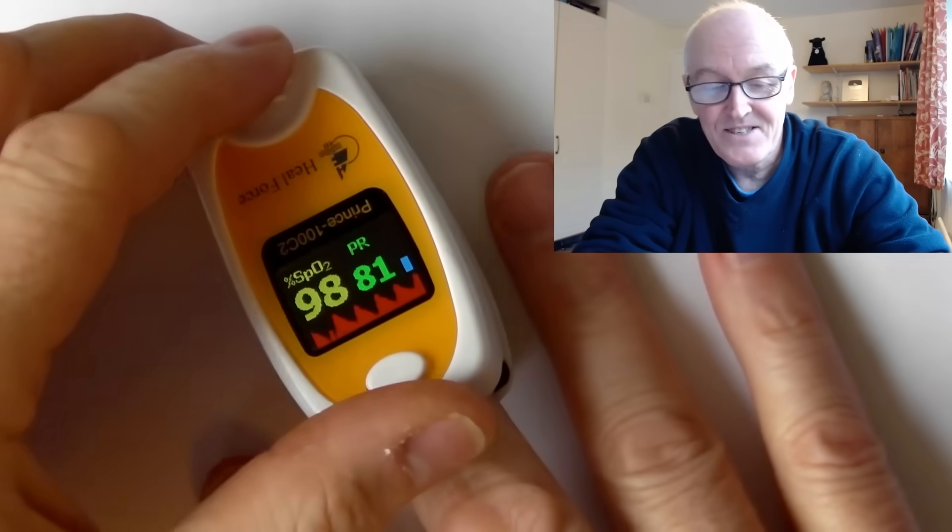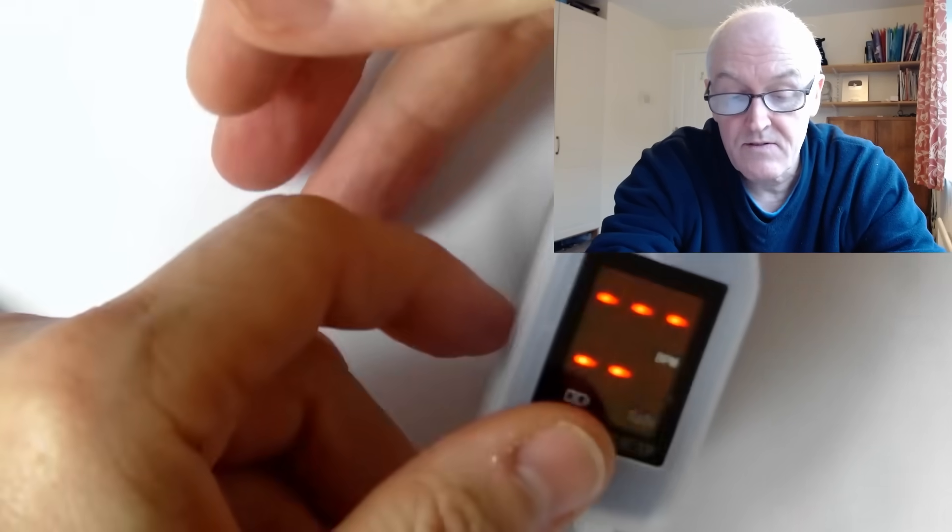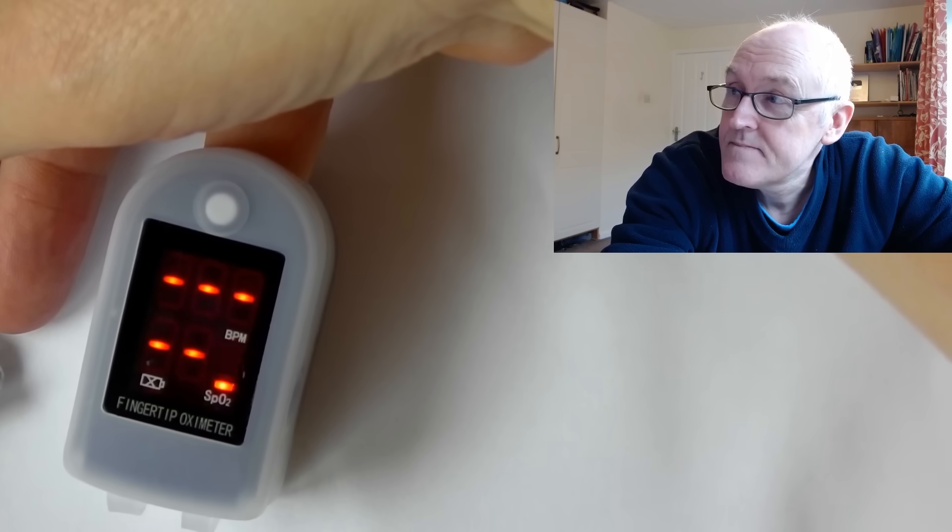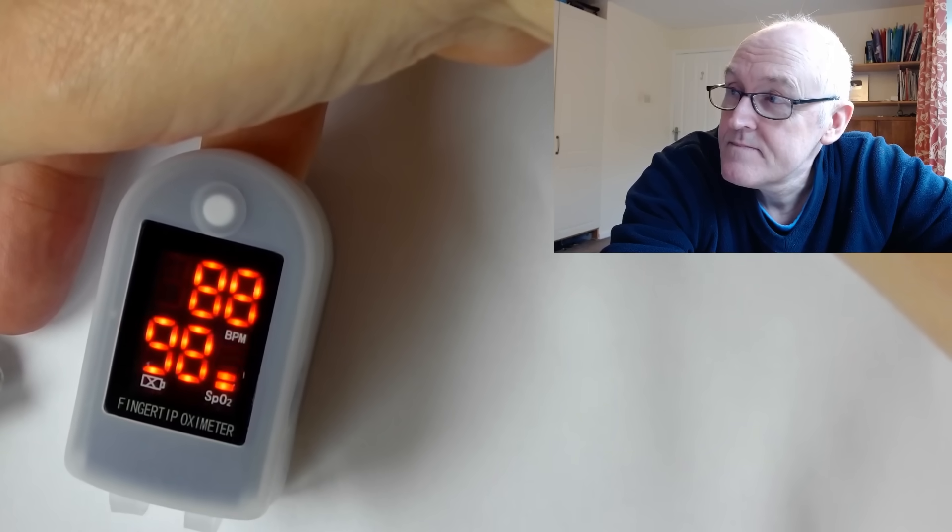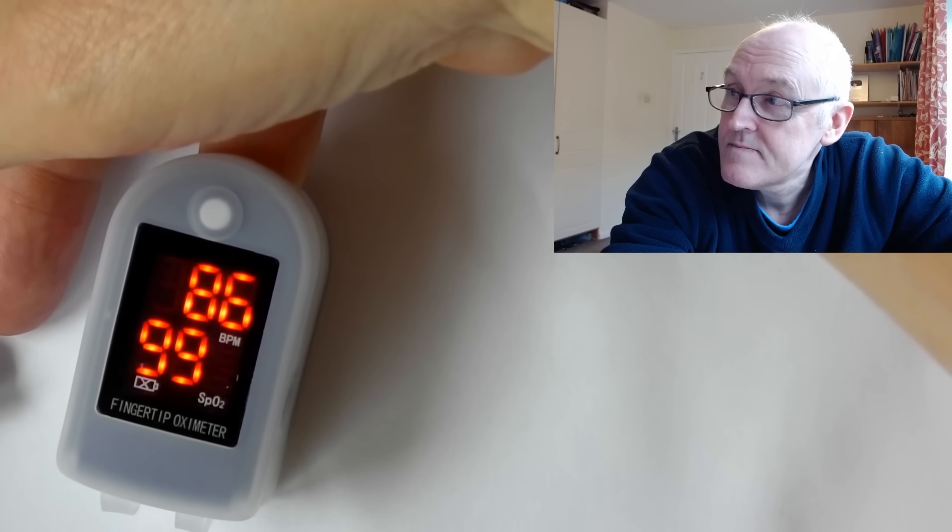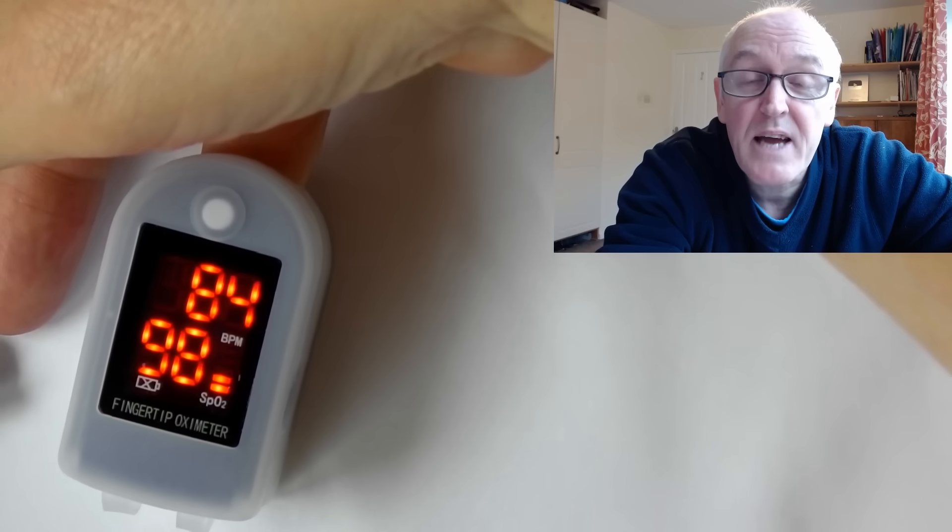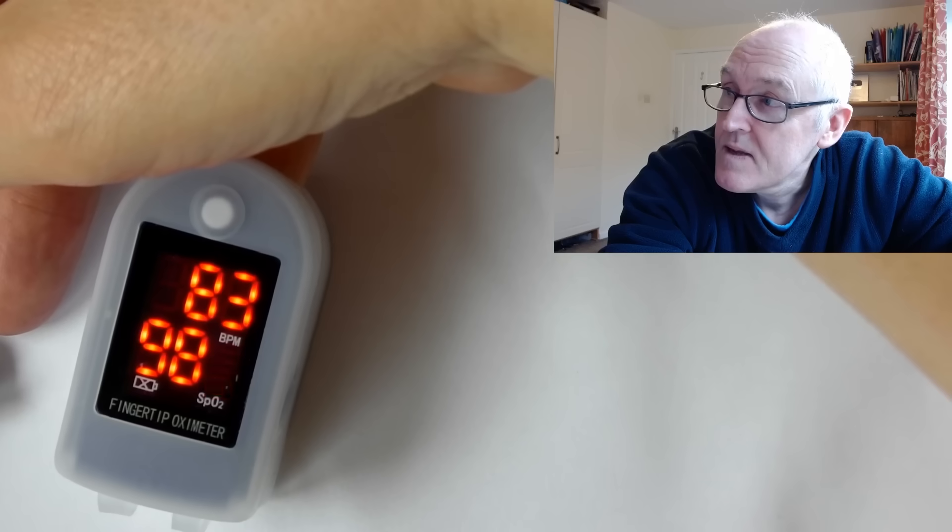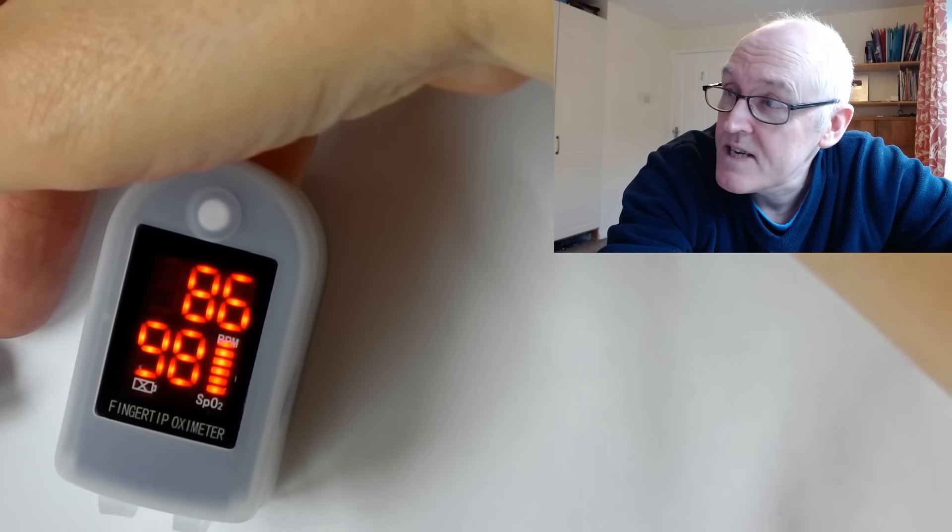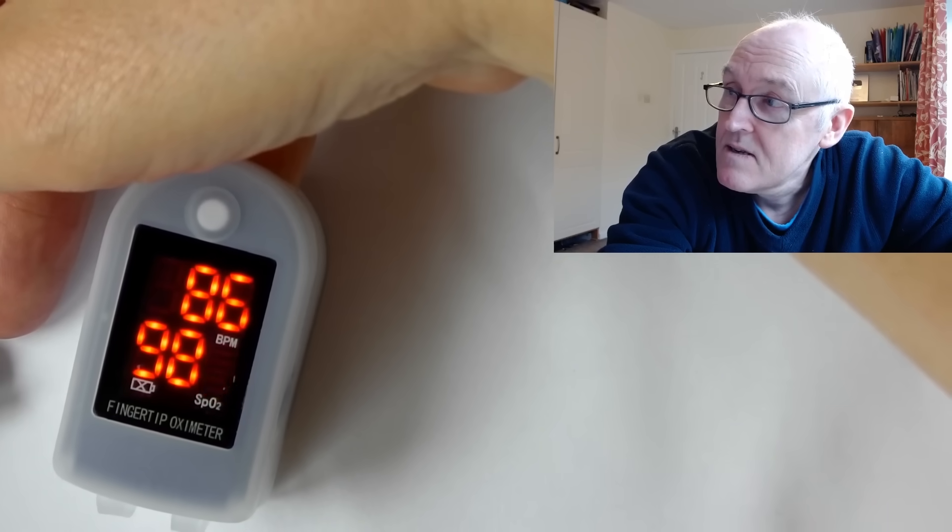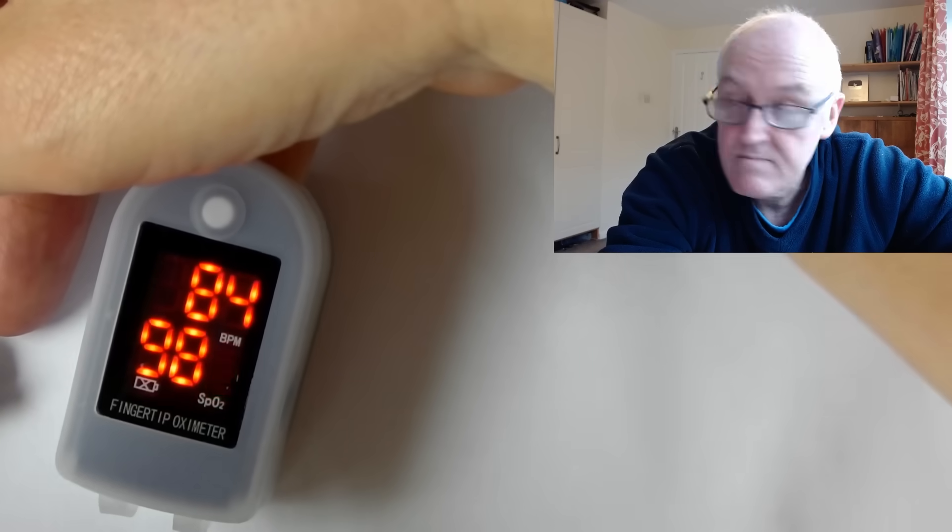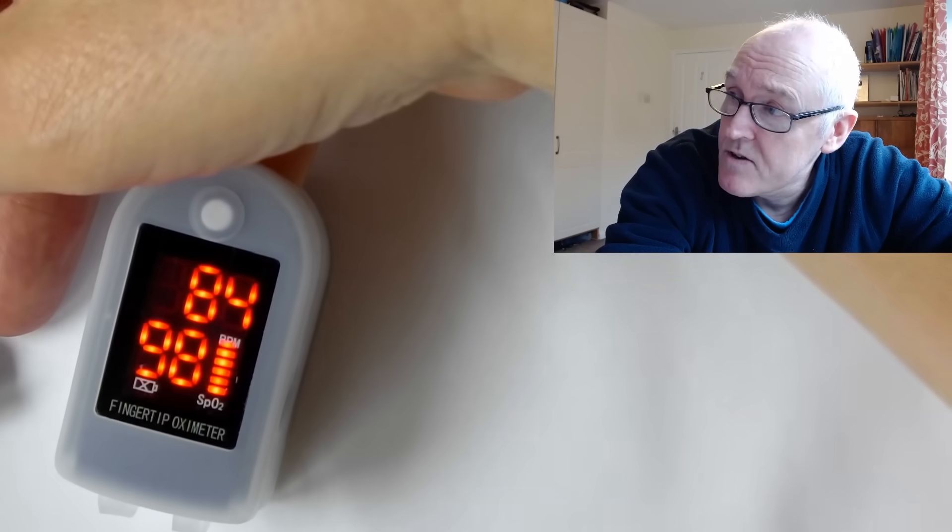I've got two probes. This one you have to turn on first. Heart rate there is 82 to 83 BPM, beats per minute. My saturations are 98%. Instead of giving a graphic, this one gives you a bar going up and down, which is also quite useful.